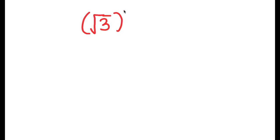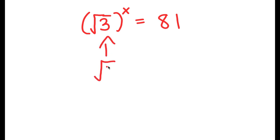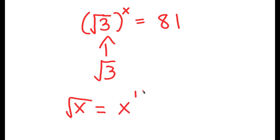In this problem, we have the square root of 3 to the power of x is equal to 81. To solve this, I'll start by focusing on the square root of 3. The square root of a number — say, the square root of x — is the same thing as x to the power of one half, because the root here is 2, we just don't write that.